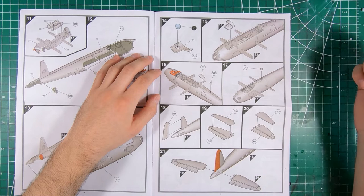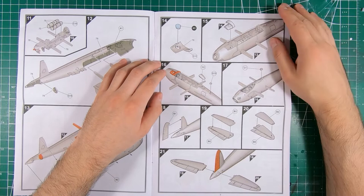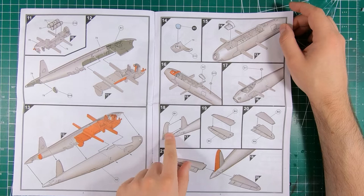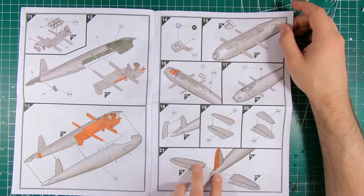A little nubbin on top and on the bottom. I believe on the photo recon variants that was also a camera port in addition to ones that would have been in the bomb bay. Now we got our rudder going into place. They don't indicate it but you could probably pose that left or right a little bit. Horizontal tail go into place and they get a nice big deep slot and they interlock so that's going to be nice and strong and hopefully self-aligning.